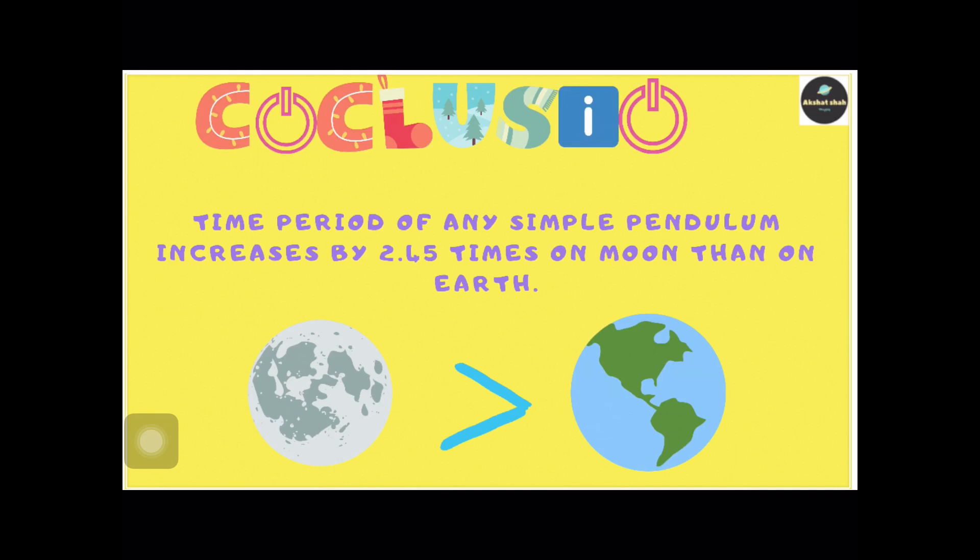The answer to our original question comes right here. The time period of any simple pendulum increases by 2.45 times on the Moon compared to Earth.